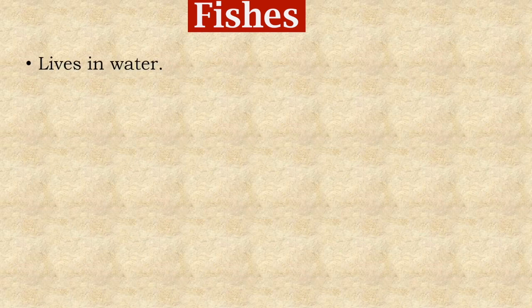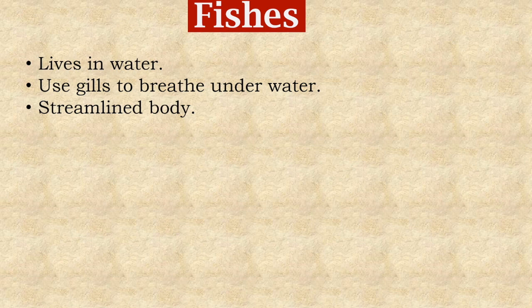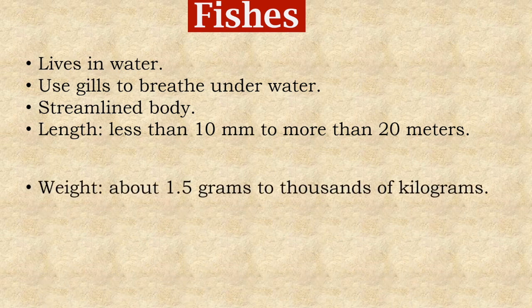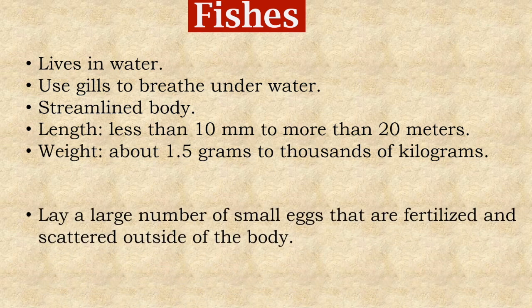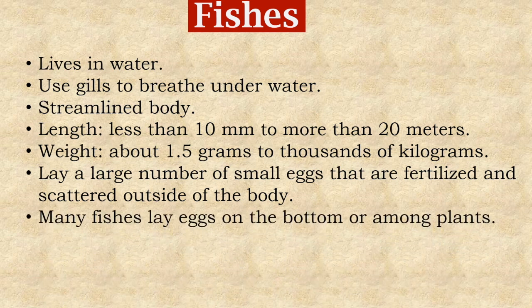Fish are the third group of vertebrates. They live in water. Unlike other animals, they use gills to breathe underwater. They have a streamlined body which helps them move through water quickly. Fishes range in length from less than 10 mm to more than 20 meters, and their weight ranges from about 1.5 grams to thousands of kilograms. Most fishes lay a large number of small eggs that are fertilized and scattered outside the body, and many fishes lay eggs on the bottom or among plants.